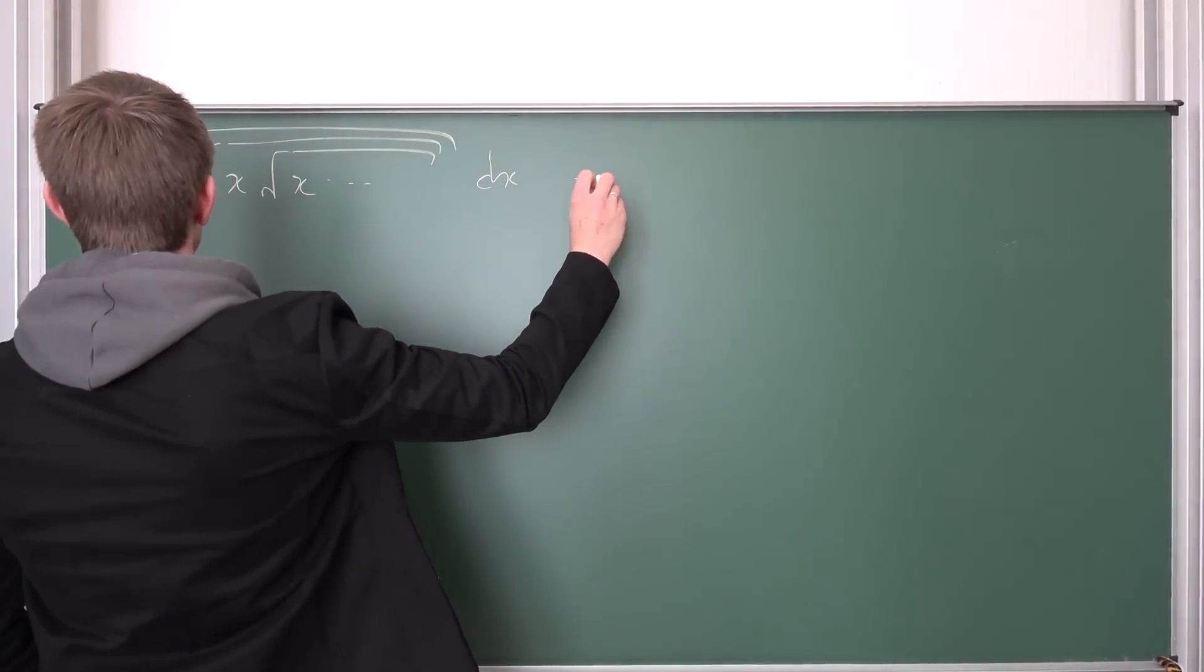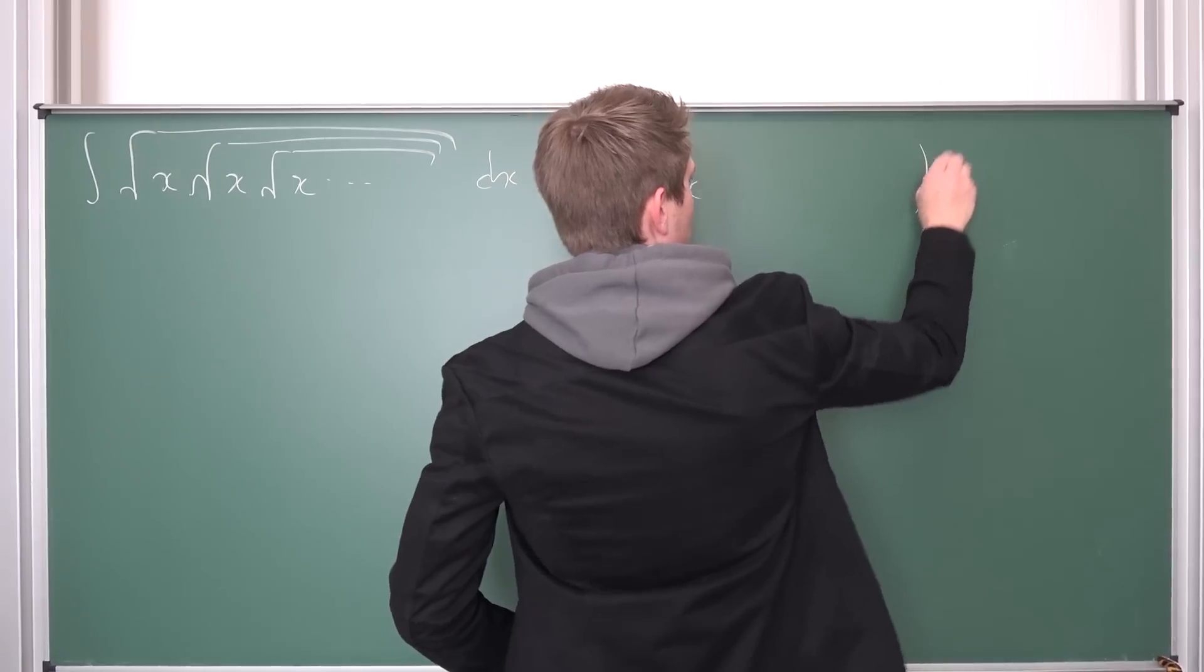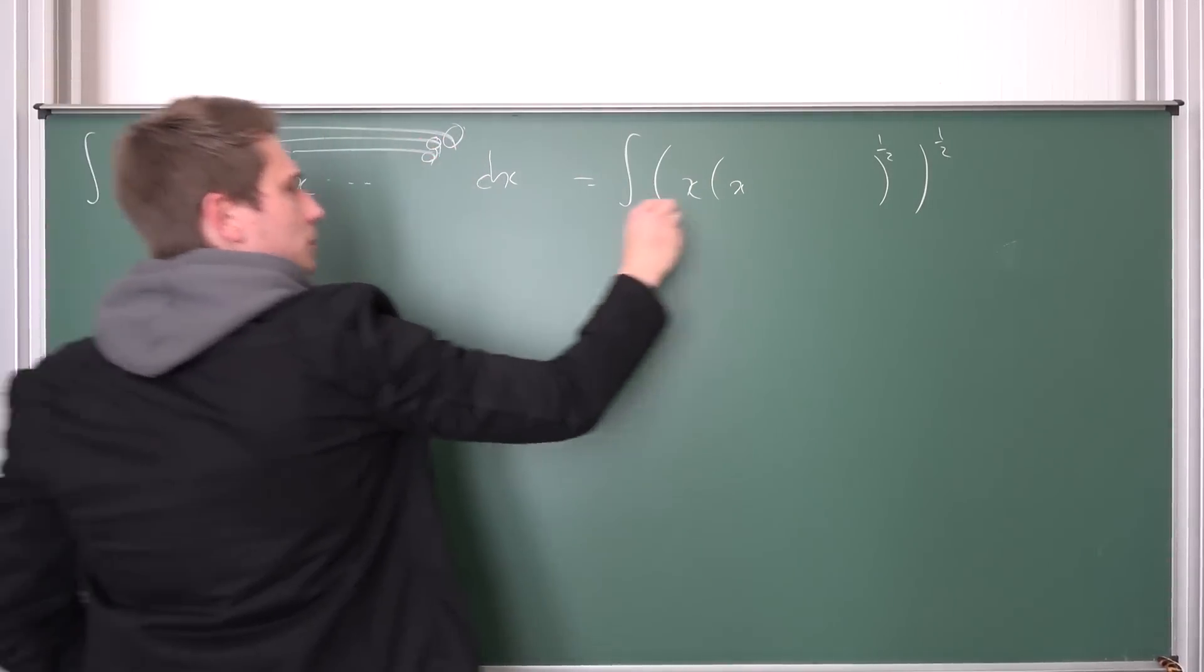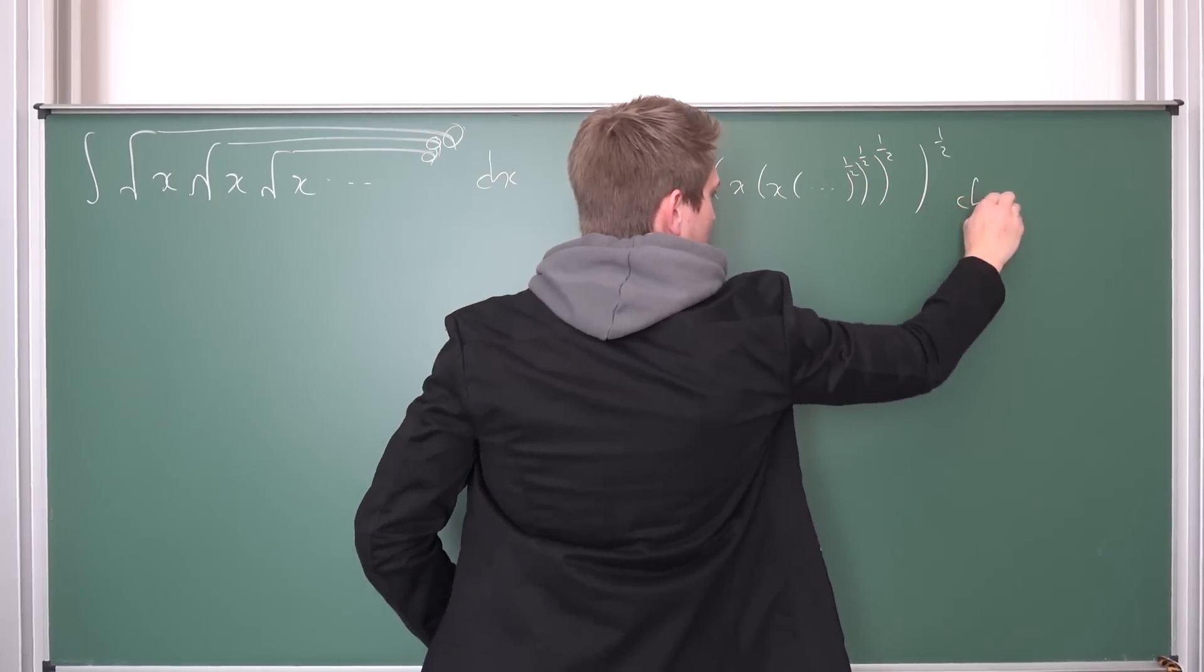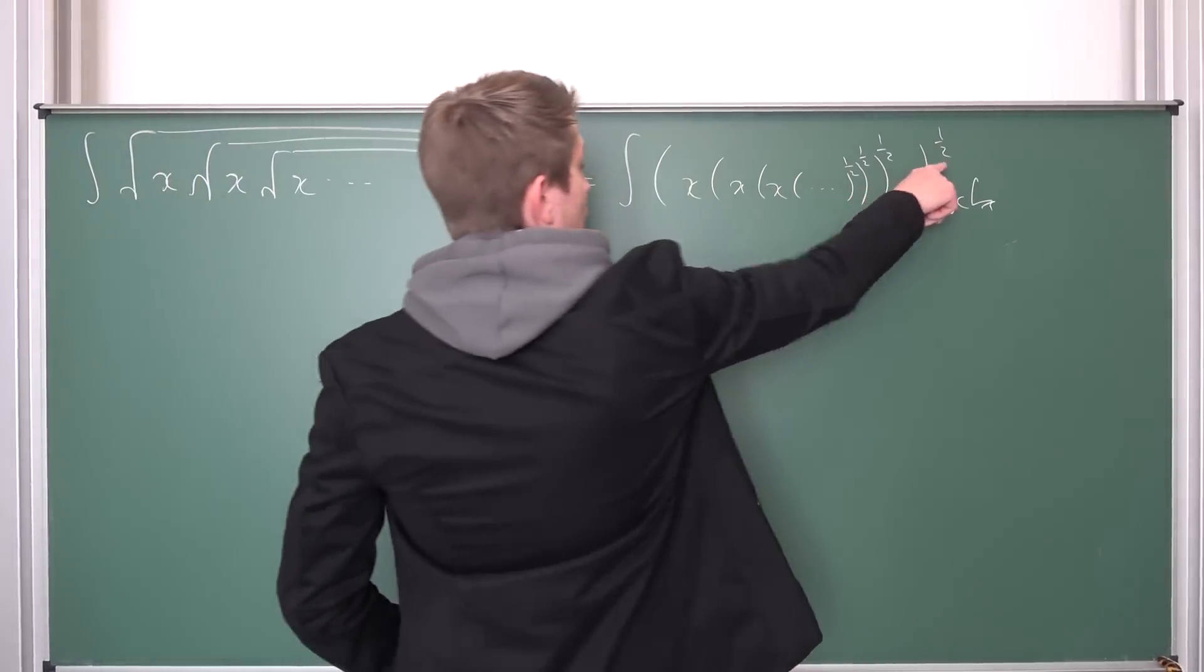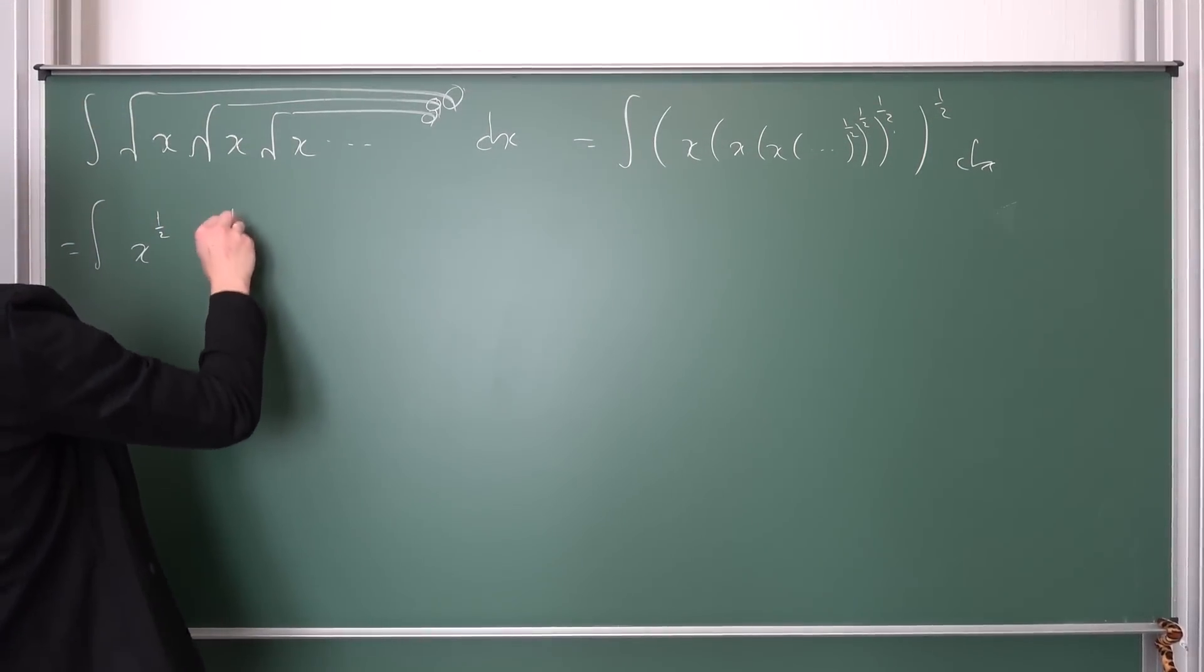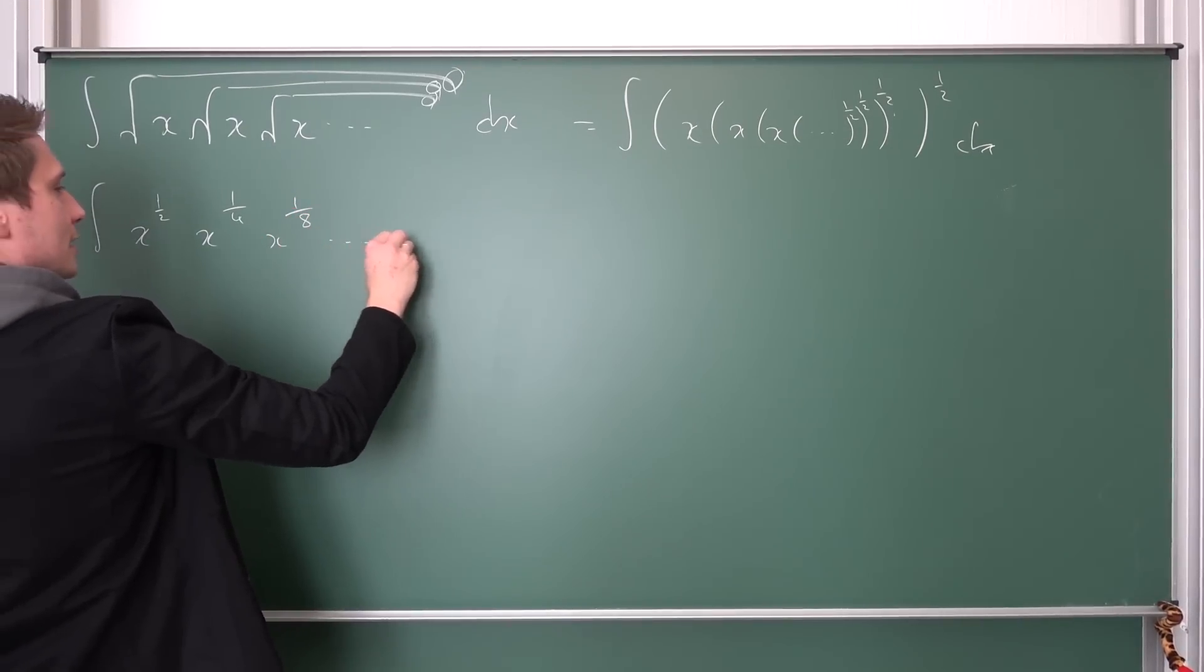Now I'm going to rewrite this at first. It's the integral of many parentheses. We have this first term x to the one-half power. This is the first square root, this one right here. For the next square root, we're going to put parentheses yet again, and it's another x to the one-half power, and then this square root. x to the one-half power to the one-half power, and so on up until infinity. This is how we're going to rewrite it.